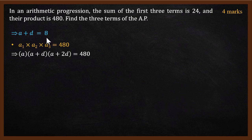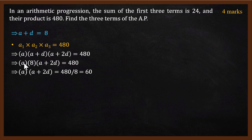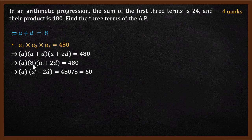Now observe that the middle term a plus d equals 8, so we can replace a plus d with 8. We get a multiplied by 8 multiplied by a plus 2d equals 480. In other words, a multiplied by a plus 2d equals 480 divided by 8, which is 60.